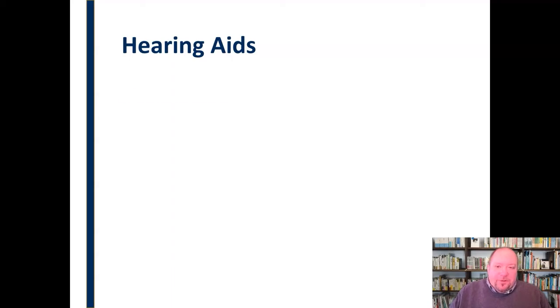The first thing that we can do is to be noise aware. As we talked about when discussing the transactional model of communication, noise is anything that interferes with the sending or receiving of a message. So we can be aware of noise as it exists in the hearing process and the problems that it can pose.